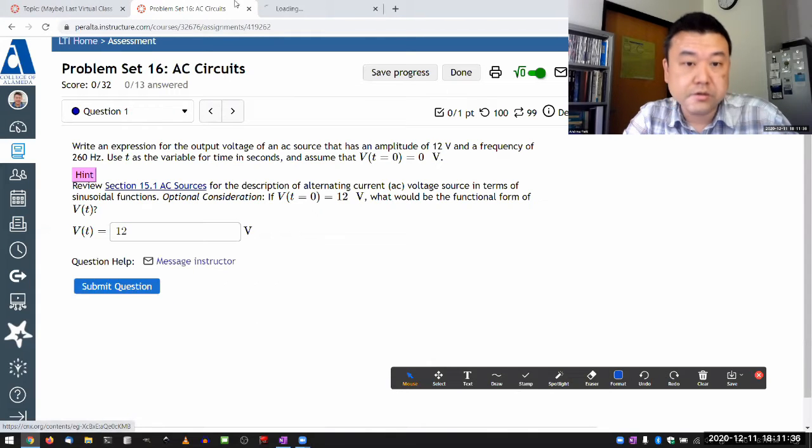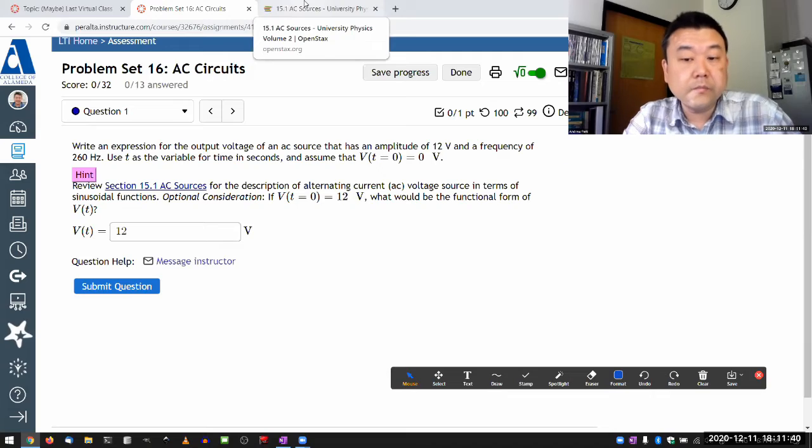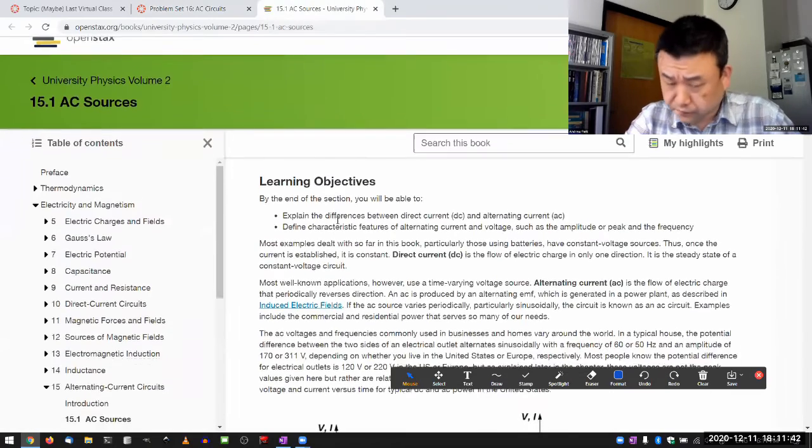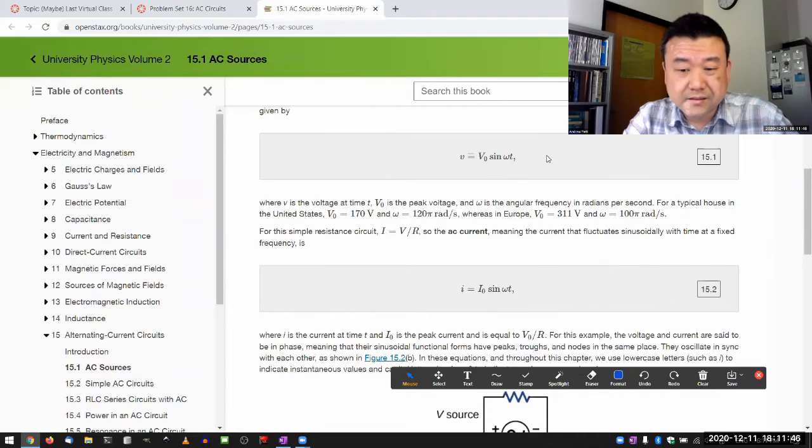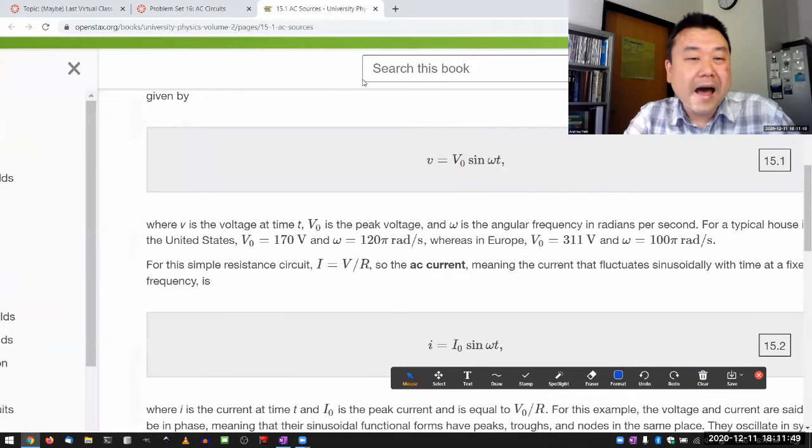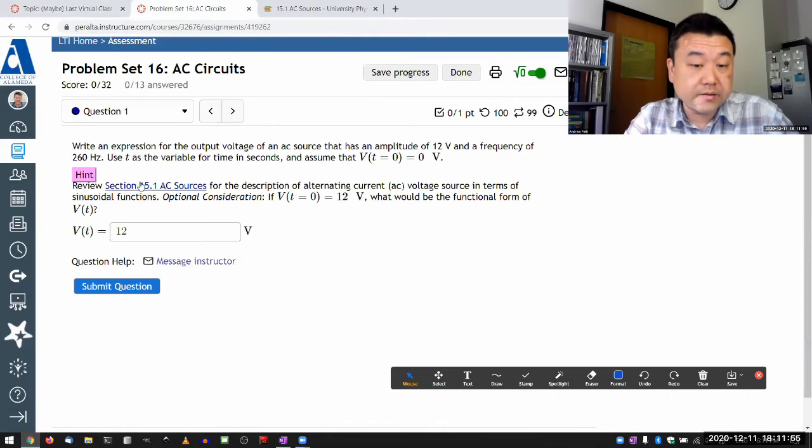So the amplitude is 12 volts and a frequency of 260 hertz. So when you look at the section, you will see the standard form for AC voltage source, which is basically this. And I wrote this question specifically so that this form would just be the answer. That's why the hint is saying optional consideration.